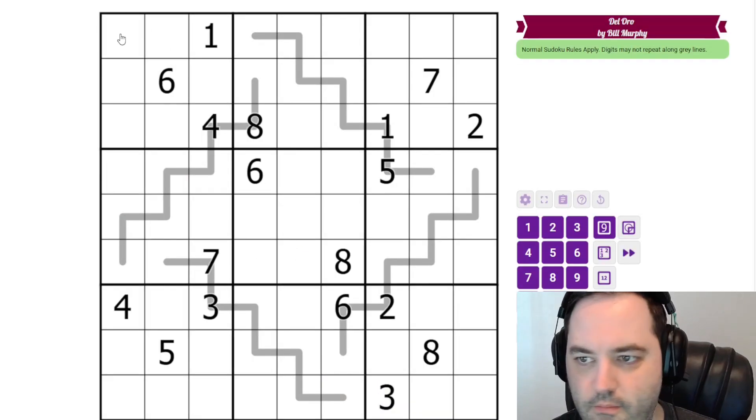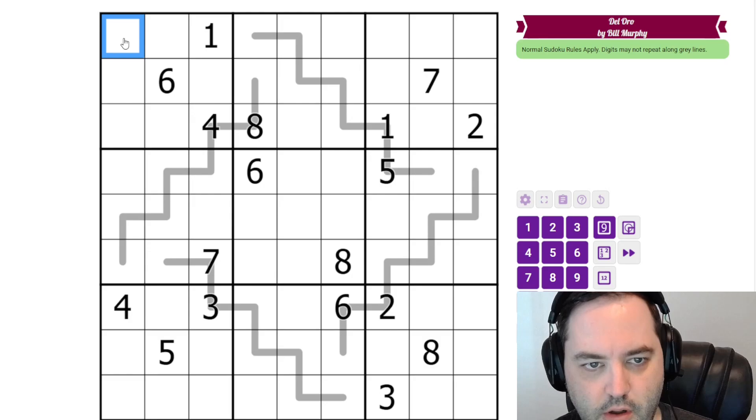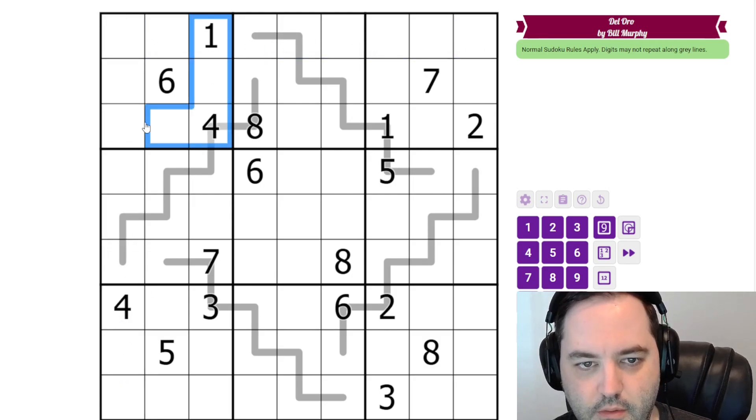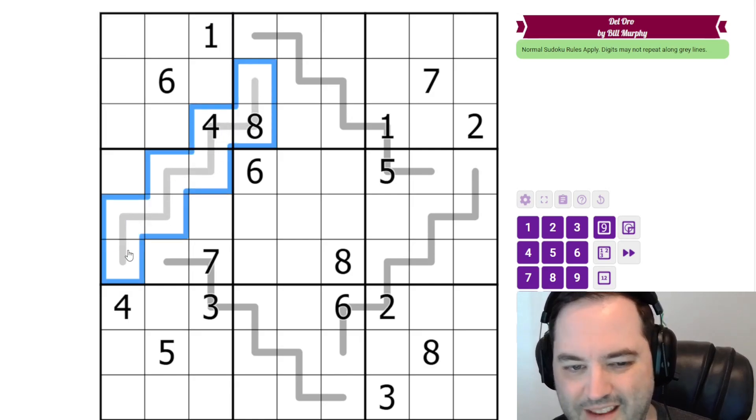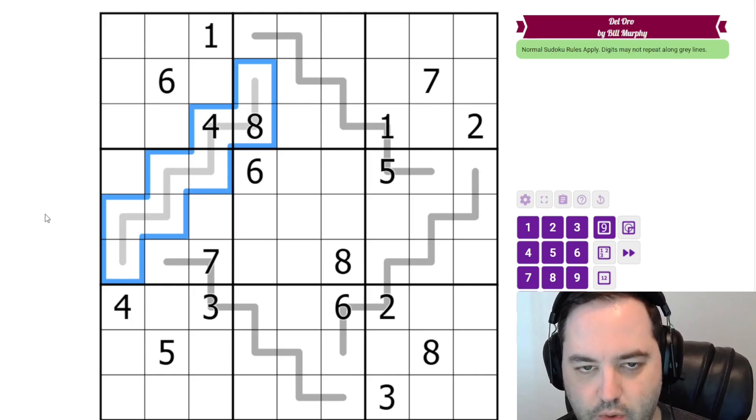This is an Argyle Sudoku, and we may have done one of these in the past, but it's been a while. It's a pretty simple variant to explain. We have normal Sudoku rules, 1 to 9 in each row, column, and 3 by 3 box. Additionally, we have these gray lines that act like extra regions where we cannot have repeats. However, they are not nine cells, so we don't have to have every digit, just can't have duplicate digits.